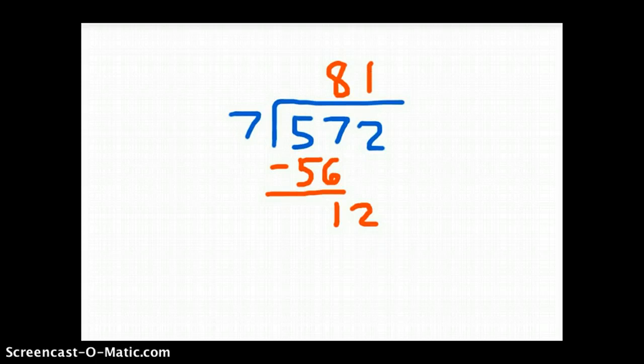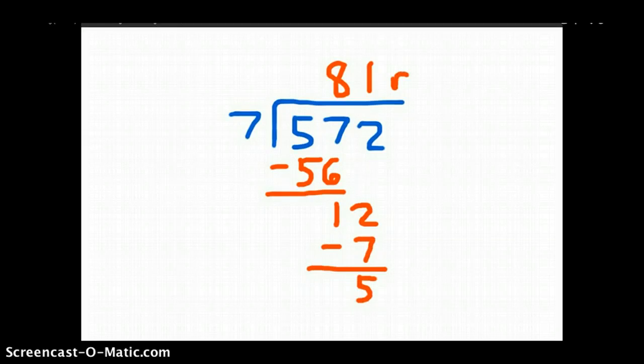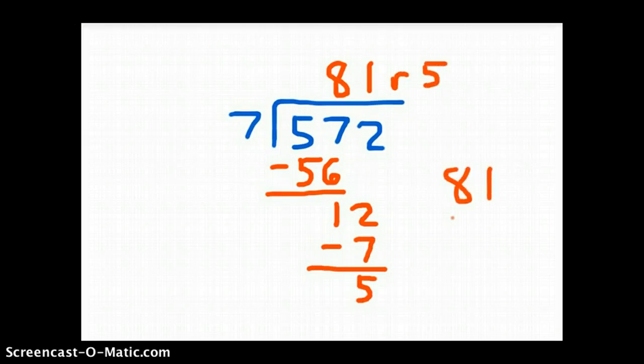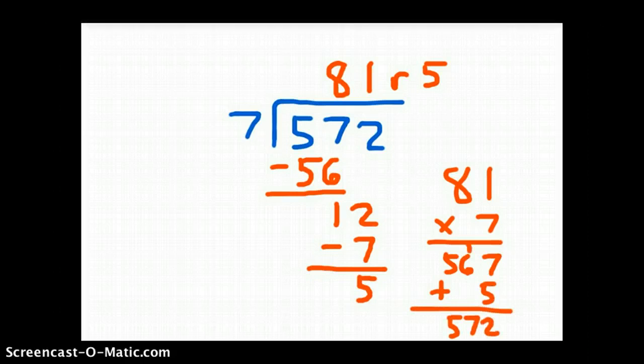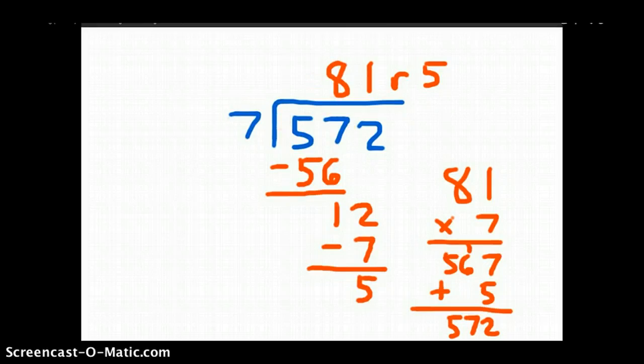And then we divide again. 12 divided by 7, which is 1. 1 times 7, which is 7. And 12 minus 7, which is 5. So our remainder is 5. Again, our check, add back in the remainder. And that's what we did here. We place that first digit, 57 divided by 7 was that 8. And again, we place the 8 right there.